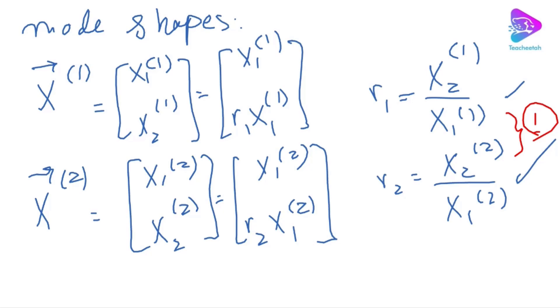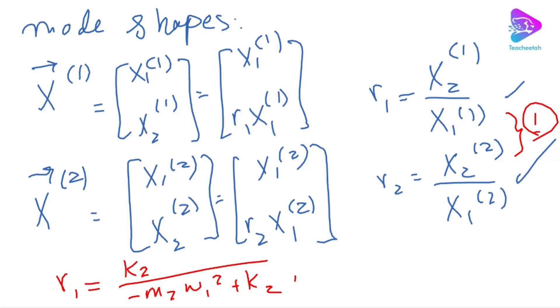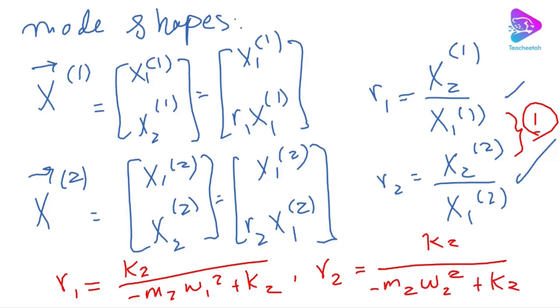We have two expressions for r1 and r2. For example, r1 equals k2 divided by (minus m2*omega1-squared plus k2), and r2 has a similar relationship but uses the second frequency omega2. Both r1 and r2 were derived with detailed calculations in the previous tutorial, so if you don't remember, go back and review how these two expressions were derived.